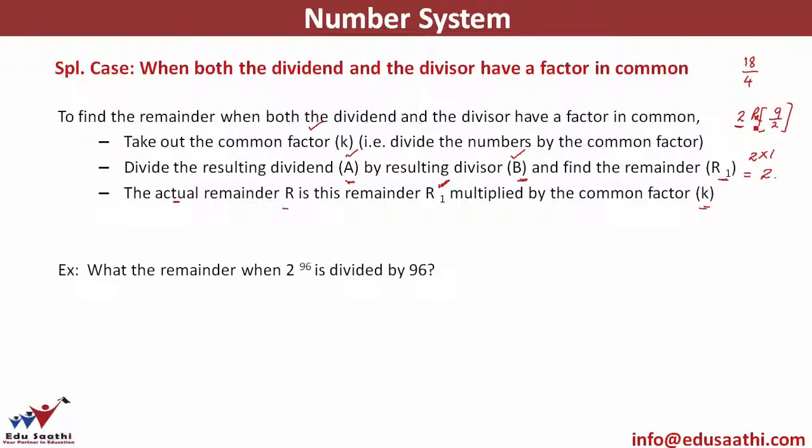Let's look at another example. What is the remainder when 2^96 is divided by 96? Now, 96 and 2^96 have 2s in common. If I write down 96, it is 32 × 3. So 96 can be broken down as 2^5 × 3.